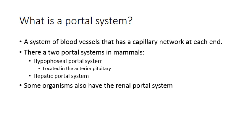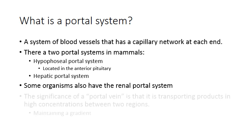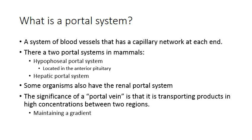Some organisms also have a renal portal system having to do with the kidney, but it's not found in mammals so we're not going to worry about that. The significance of a portal vein is that it transports products at high concentrations between two regions, maintaining that concentration gradient — so in the hypophyseal portal system it maintains the concentration gradient of hormones from one capillary network to another.